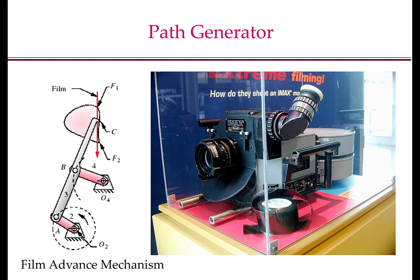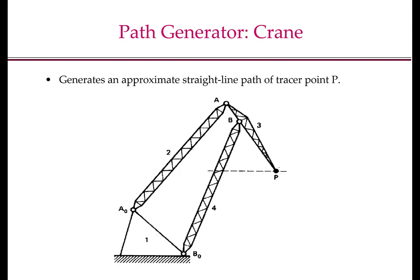An example of a path generator is the film advance mechanism. This is again a 4-bar mechanism where we want the point C on the coupler to approximately follow a straight line vertically downwards. This hooked portion, denoted by point C, locks into the gap on the side of the film and pulls the film downward, then disengages and goes back and pulls it again. There are two such mechanisms pulling the film from two sides, and that's how the film gets advanced. Another example of a path generator is a crane, where P is the tracer point on the coupler and we want the tracer point P to follow a straight line approximately.